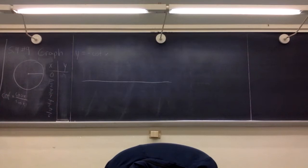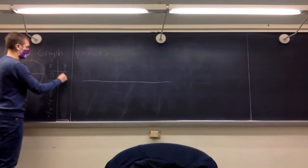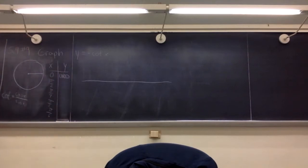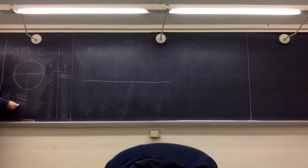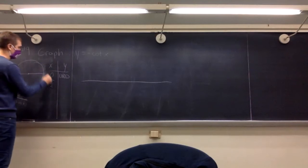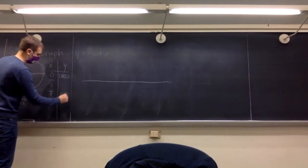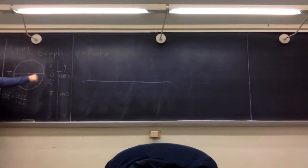What happens at zero this time? Cosine is one and sine is zero, so right here we have an undefined value — not at pi over two but at zero. The next undefined value is at pi, where sine is zero again. And it's going to be undefined at two pi as well. So we get undefined values at multiples of pi.